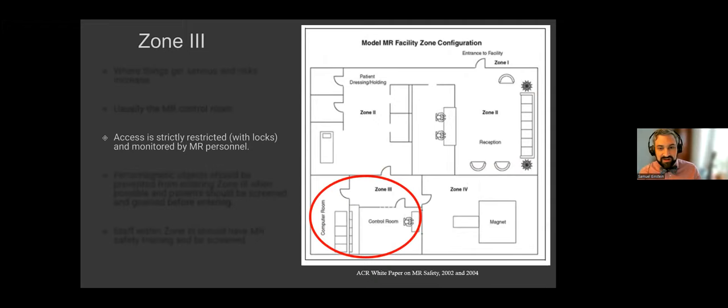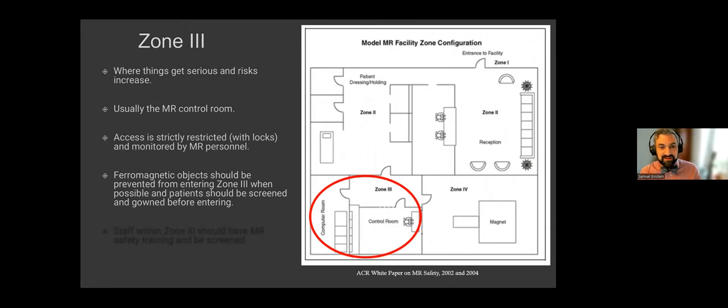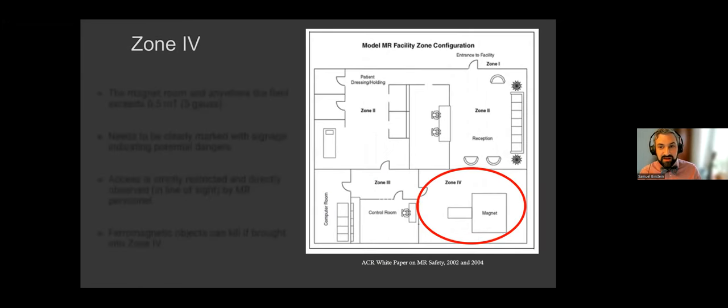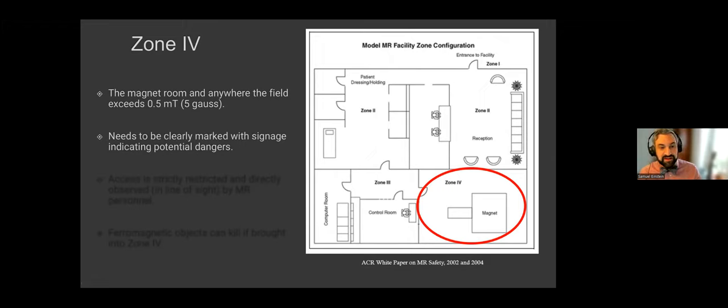Zone three. So here's the strictly controlled one. So this is where things get serious and risks increase. This is usually the MR control room and access is strictly restricted. So we have locks. It's monitored by MR personnel. We take safety very seriously at zone three. So ferromagnetic objects should be prevented from entering zone three when possible. Patients should be screened and gowned before entering zone three. And staff within zone three should all have MR safety training and be screened themselves too. Zone four, finally, we get to the magnet room. This is old, obviously. It's now nine gauss, but wherever the field exceeds nine gauss, we can also consider that zone four. It needs to be clearly marked with signage to indicate potential dangers. And of course, access is strictly restricted. We have locks on these doors as well. And we require an observation line of sight by MR personnel for patients and non-MR personnel.